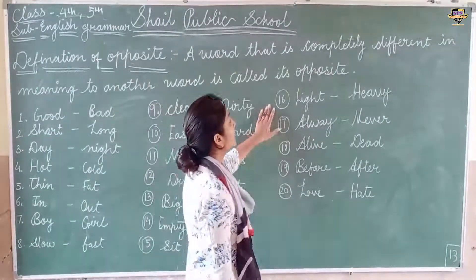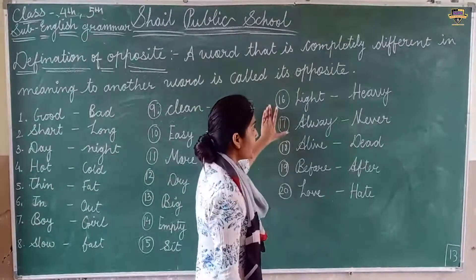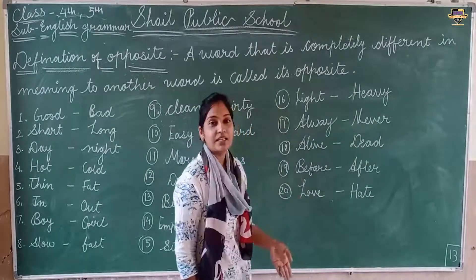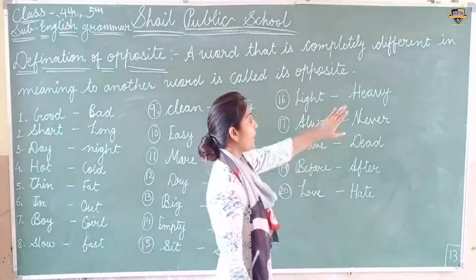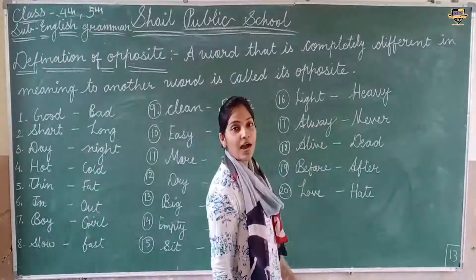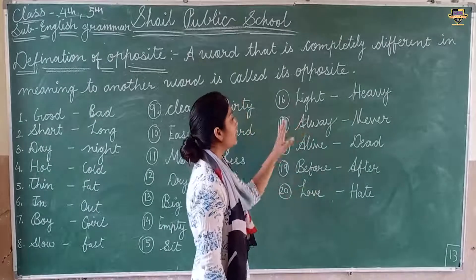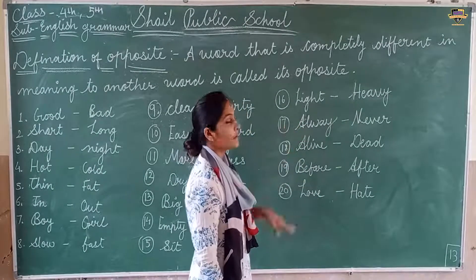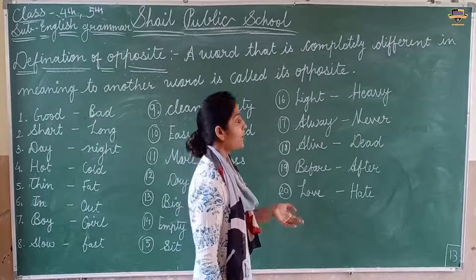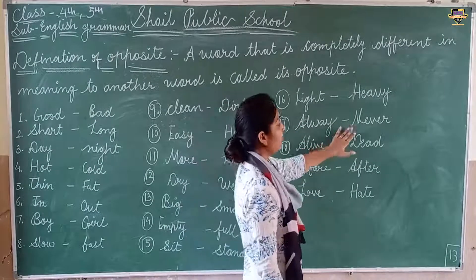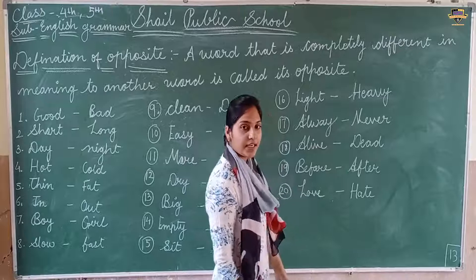Light — opposite word is Heavy. Always — opposite word is Never.